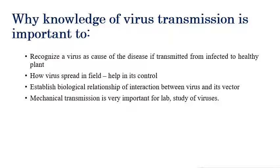As a virologist, having knowledge on plant virus transmission is important because then only we can recognize the disease or the cause of disease transmitted from infected plants to healthy plants. For example, if a particular area is infected by tobacco mosaic virus, we need to know how it is transmitted — whether by vector, by sap, or by some other means — and what the transmission agent involved is, so we can manage plant viral diseases efficiently.